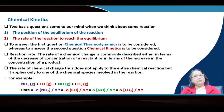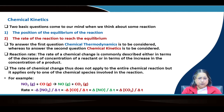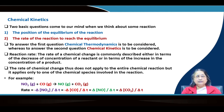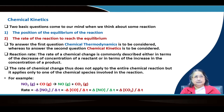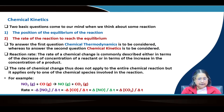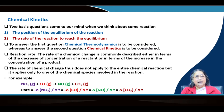Two basic questions come to mind when we observe a reaction. The first is the position of equilibrium — how far will the reaction go? This is already covered in Chemical Equilibrium. The second question is the rate of the reaction. Chemical equilibrium does not tell us about the speed of the reaction — whether it will be fast or slow. That is handled in chemical kinetics. To answer the first question, chemical thermodynamics is important; to answer the second, chemical kinetics is important.